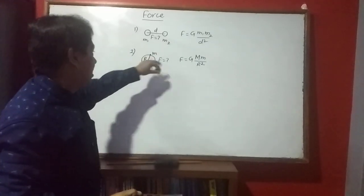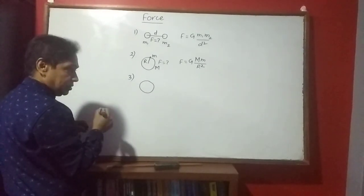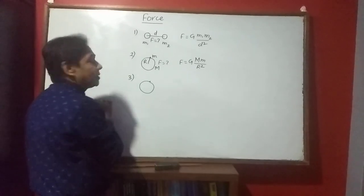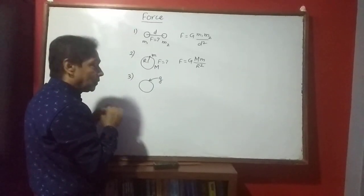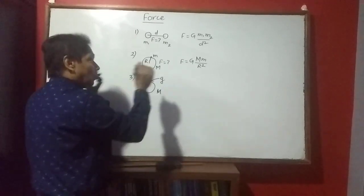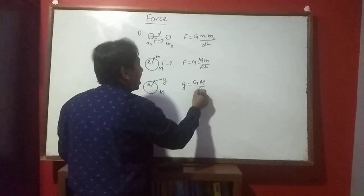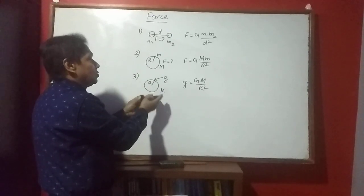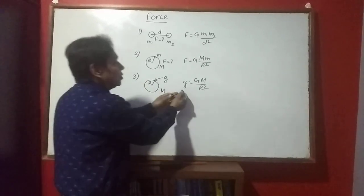Sometimes, instead of gravitational force, acceleration due to gravity is asked. If you are told to calculate the acceleration due to gravity on the surface of a heavenly body, denoted by small g, and the mass M and radius R of the body are given, you can use: g = G·M / R². Use this equation for any heavenly body like Earth or near its surface.